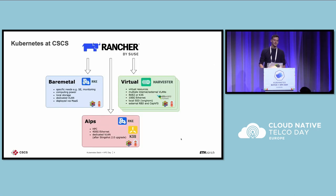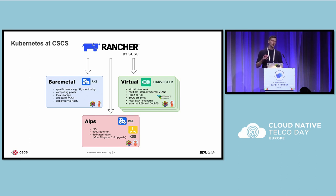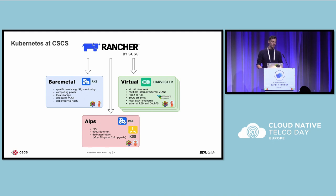Regarding Kubernetes at CSCS, we leverage Rancher to provide the Kubernetes service at the center, and we have three main scenarios: bare metal, virtual, and ALPS. The bare metal scenario uses commodity hardware running Kubernetes natively without a hypervisor or virtual machines — for example, for the WCG storage element running Kubernetes with cache, or our Elasticsearch cluster where we want local disks for maximum performance. On the ALPS side, we can deploy Kubernetes clusters on the HPC machine using Rancher with K3S or RKE, benefiting from the HPC infrastructure.